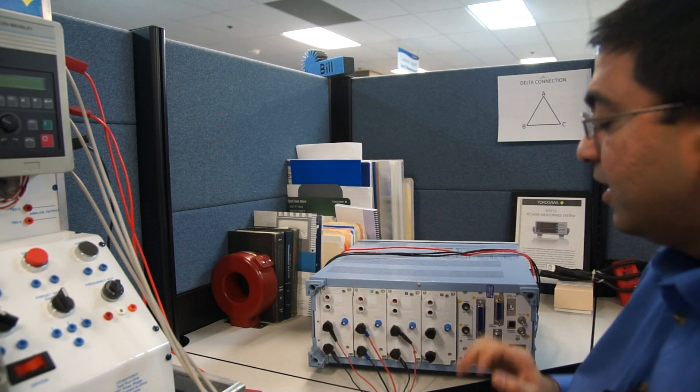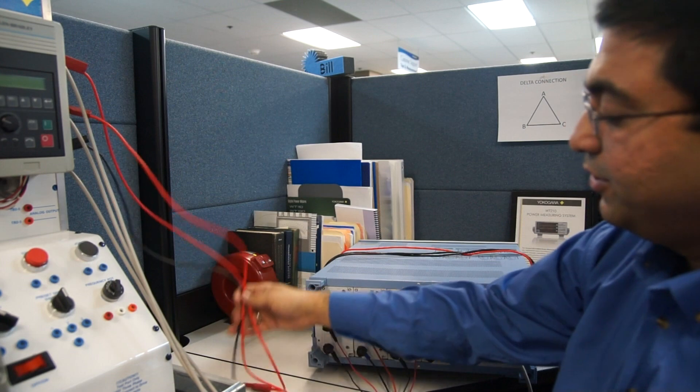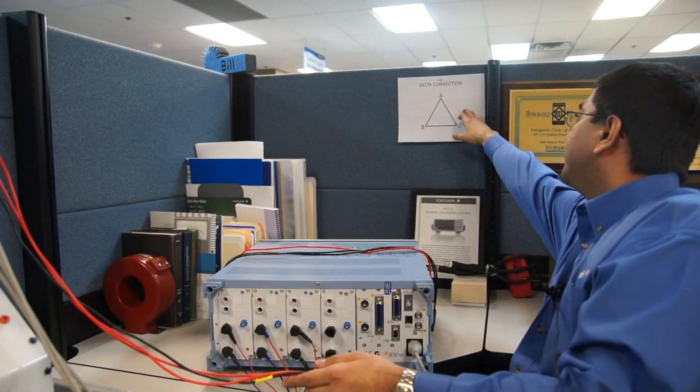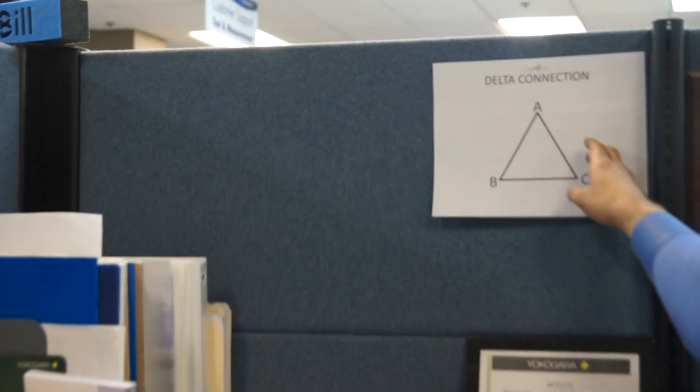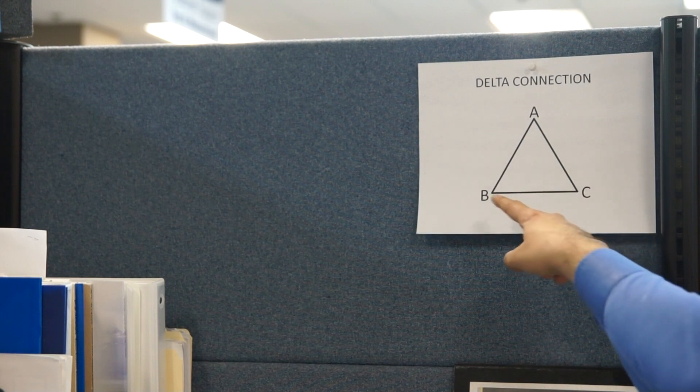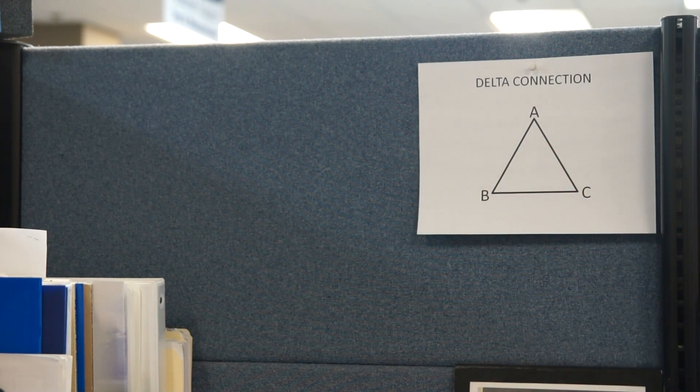Let's go ahead and now make our voltage connections. For the voltage connection, I am going to use the delta connection method. In the delta connection method, it is a triangle delta connection. So you have A to C, you have B to C, and A to B. So that is exactly how we are going to wire our phase voltages.